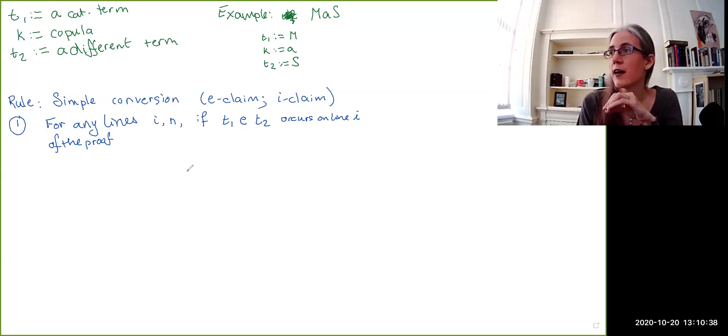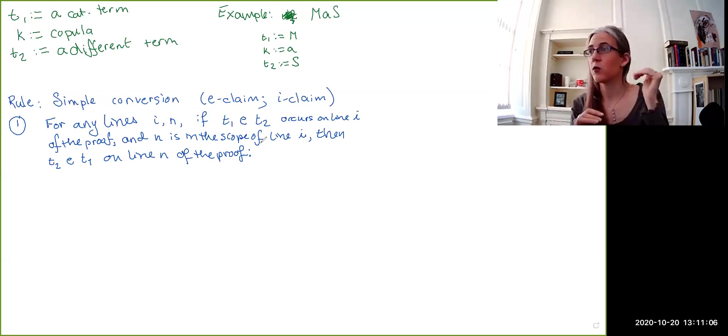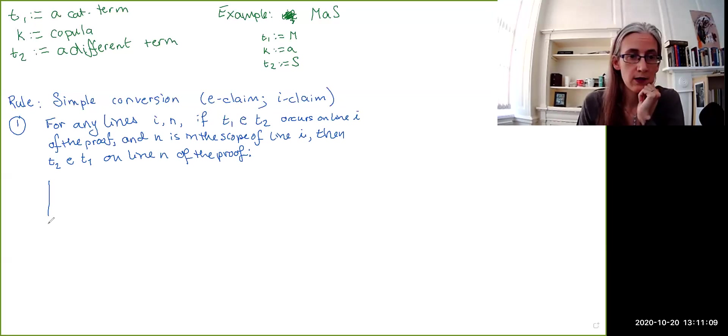If this proposition occurs on line i of the proof, and line n is in the scope of line i, then we can write T2, E, T1 on line n of the proof. So, schematically, what this will look like is we have our scope line. There's stuff going on up here, our two premises. But then, at some point, we come to a line i, where we have the proposition T1, E, T2,